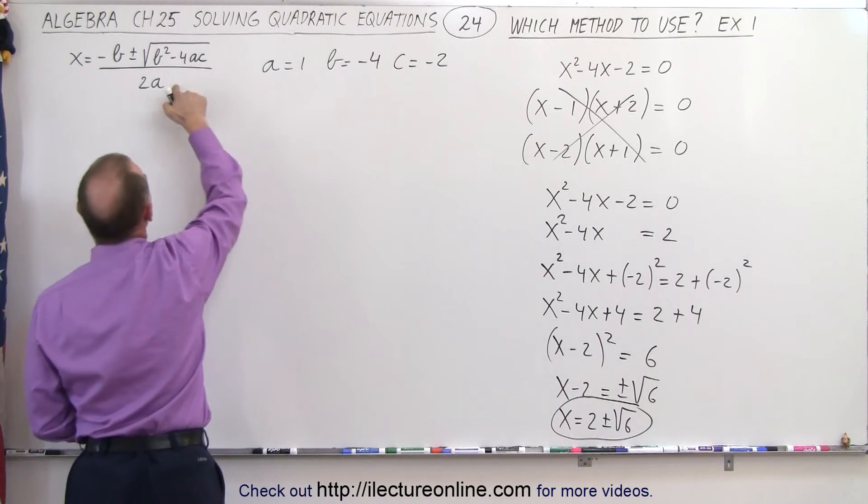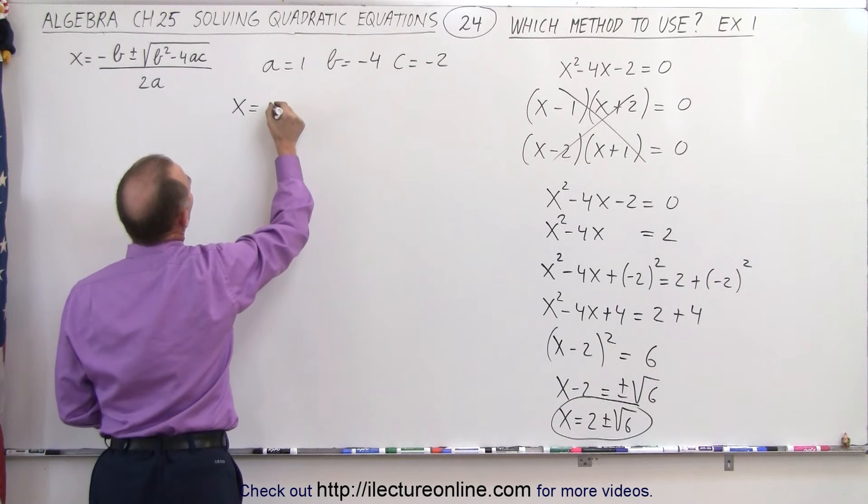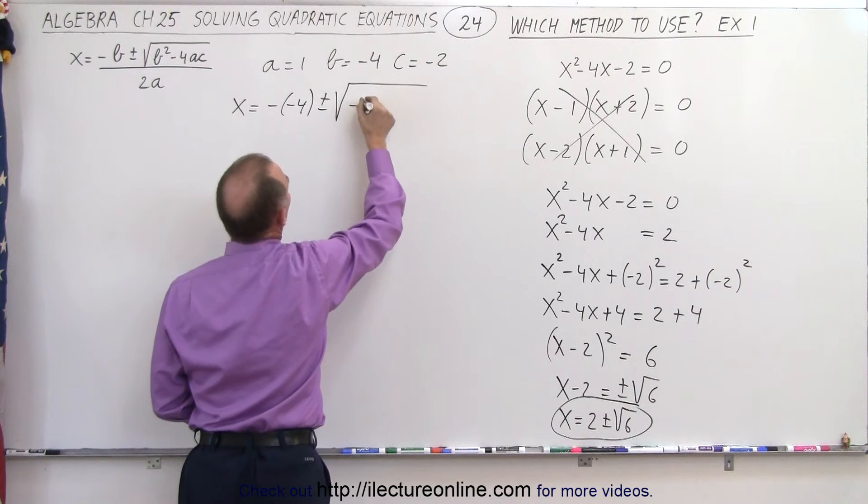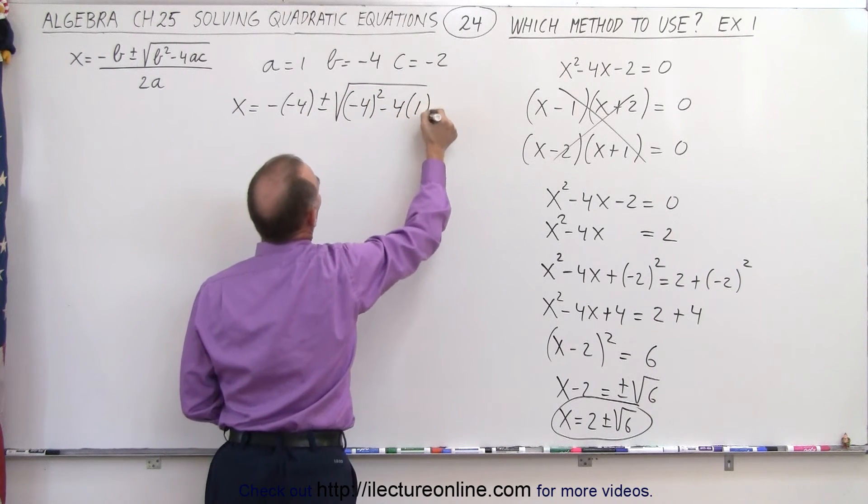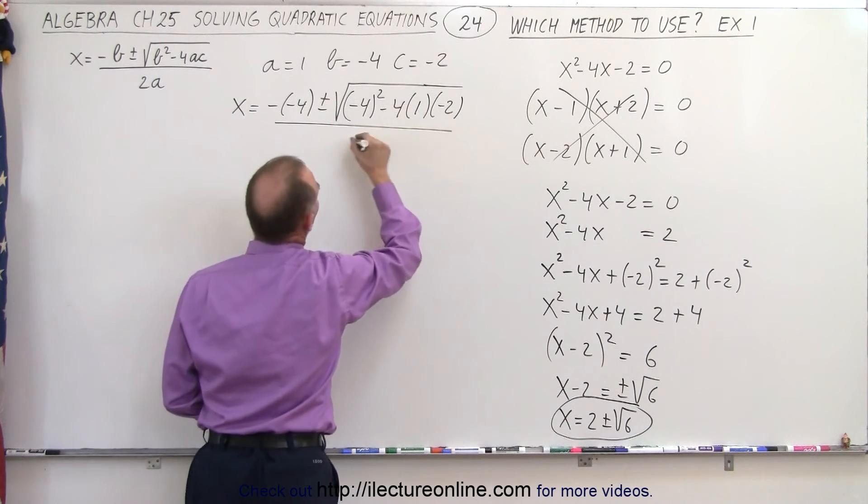We go ahead and plug those into our equation. So we have x is equal to minus b which is a minus times a minus four plus or minus the square root of minus four squared which is b squared minus four times a which is one times c which is negative two all divided by two times a.